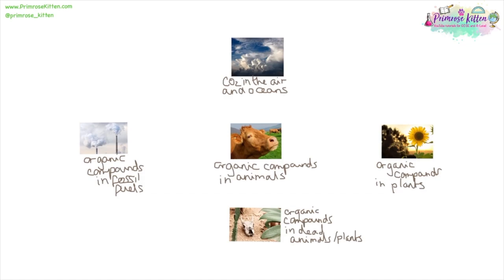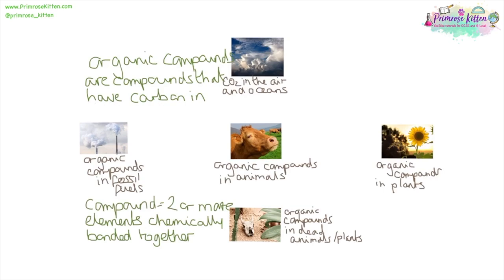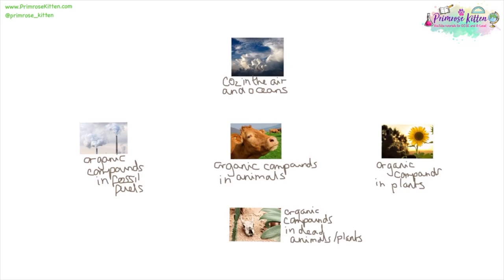For the carbon cycle, I'm referring a lot to organic compounds. If you haven't heard this phrase before, it can be a bit confusing — organic compounds are just any compound that has carbon in it. A compound is two or more elements that are chemically bonded together. Here are all the different locations that carbon can be: carbon dioxide in the air, or carbon dioxide dissolved in oceans; as organic compounds in plants or animals; in dead plants and animals; and in fossil fuels. You need to know the various ways carbon changes between these locations and what those processes are called.